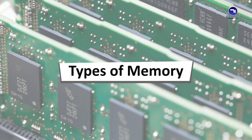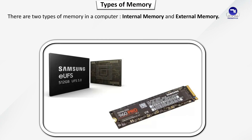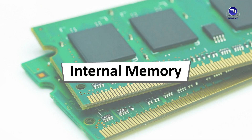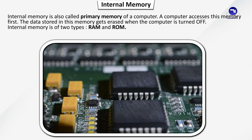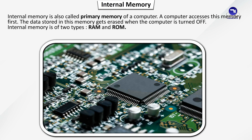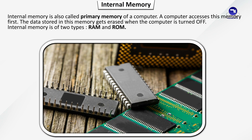There are two types of memories in a computer: internal memory and external memory. Internal Memory is also called primary memory of a computer. A computer accesses this memory first. The data stored in this memory gets erased when the computer is turned off. Internal Memory is of two types: RAM and ROM.